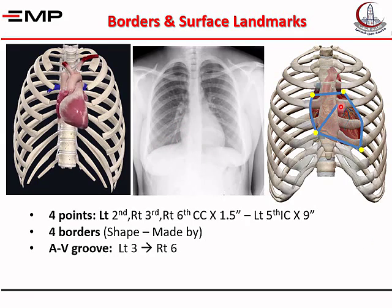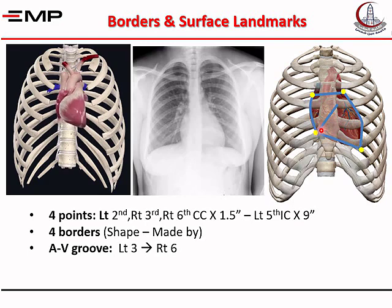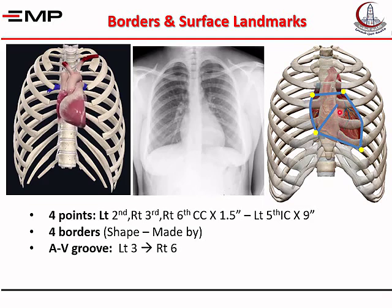The atrioventricular groove or coronary groove extends from the left third costal cartilage at its junction with the sternum to the right sixth costal cartilage. From this point, you can draw a line parallel to the left border — it is the anterior interventricular groove separating the left ventricle from the right.